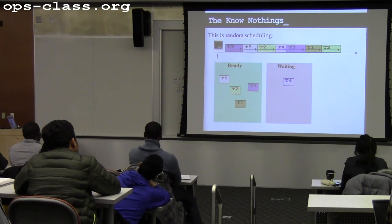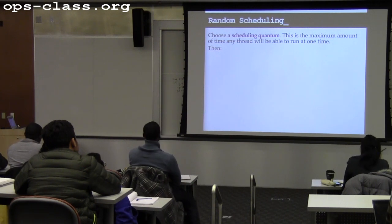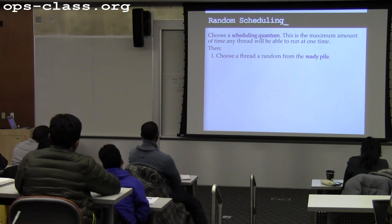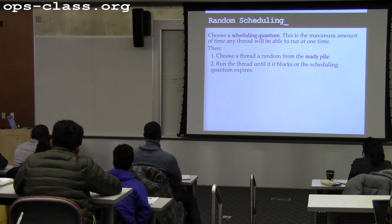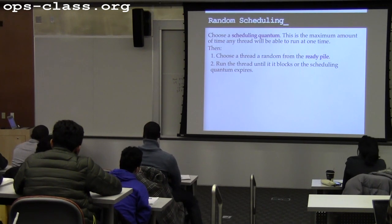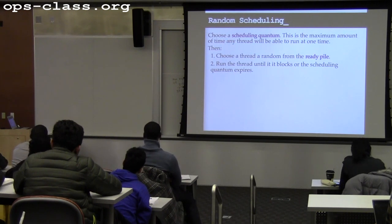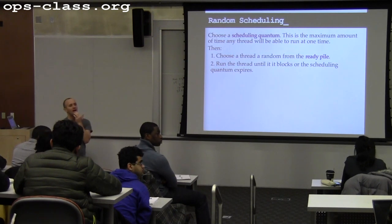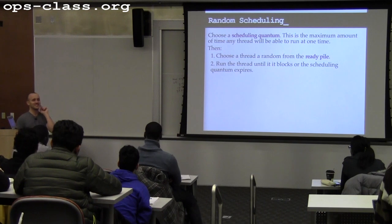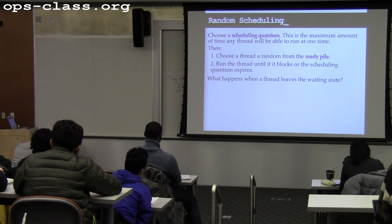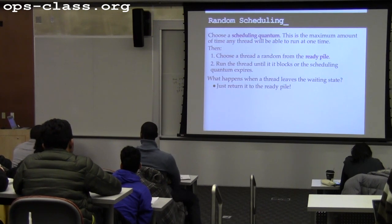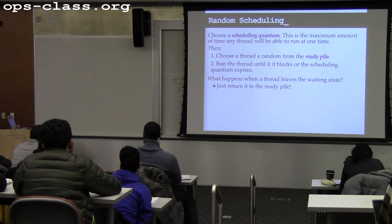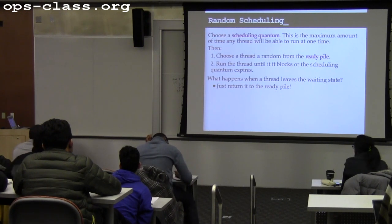This is random scheduling: I choose a scheduling quantum — the maximum time I allow a thread to run — and I choose a thread to run at random from the ready pile. I don't really have a queue with random scheduling, just a pile of threads. I run it until it blocks, its scheduling quantum expires, it completes, or it yields. When a thread leaves the waiting state, I put it back on the ready pile.